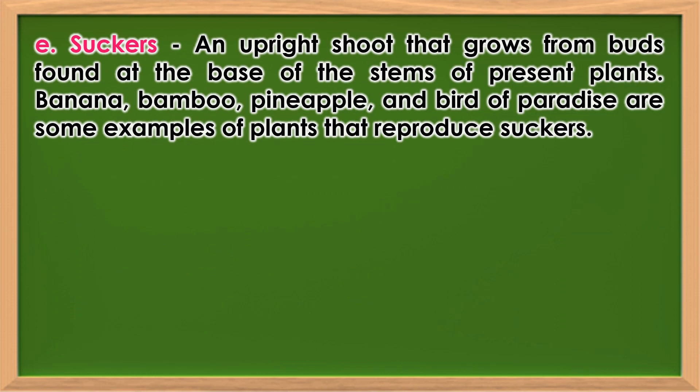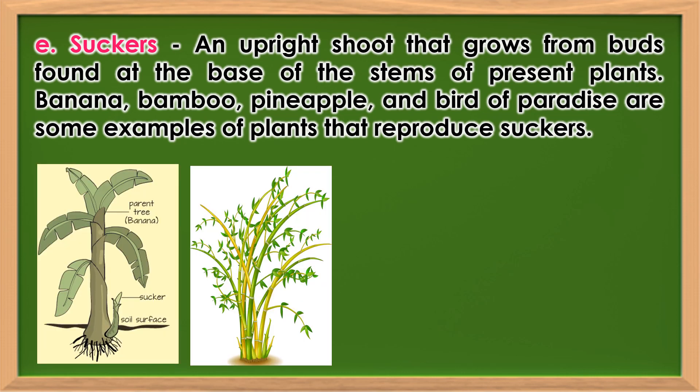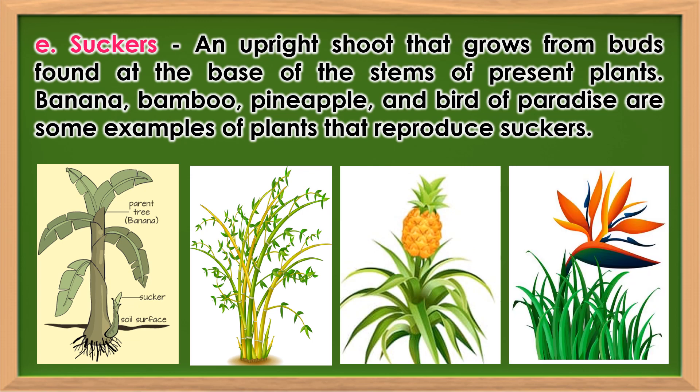Suckers: An upright shoot that grows from buds found at the base of the stems of parent plants. Banana, bamboo, pineapple, and bird of paradise are some examples of plants that reproduce through suckers.